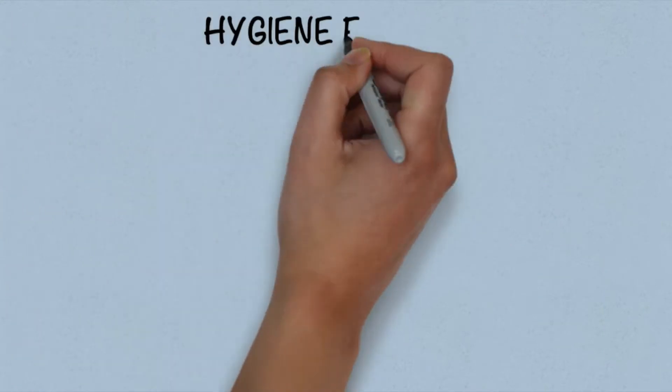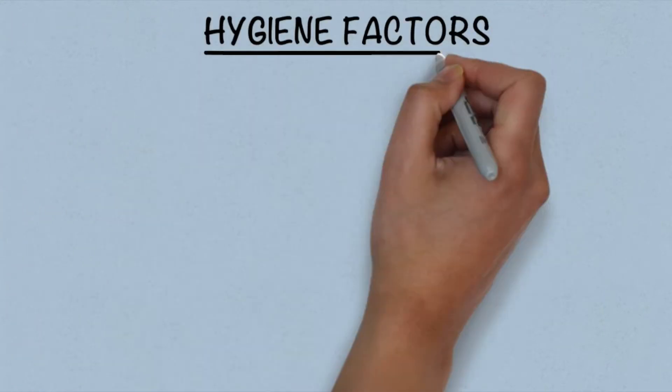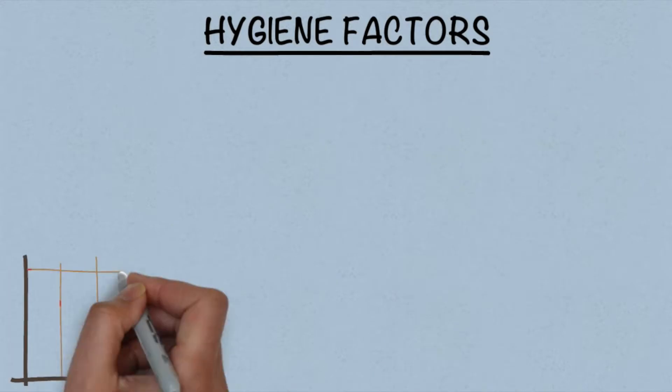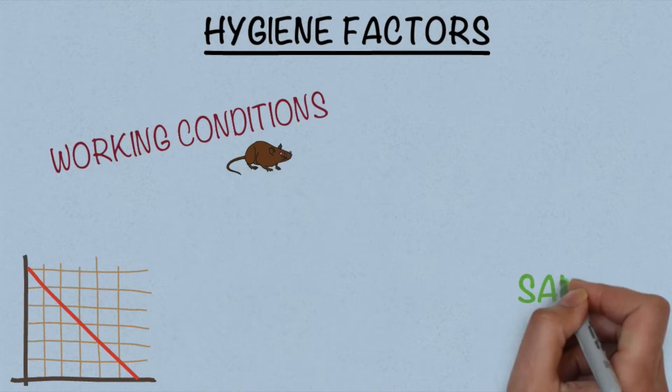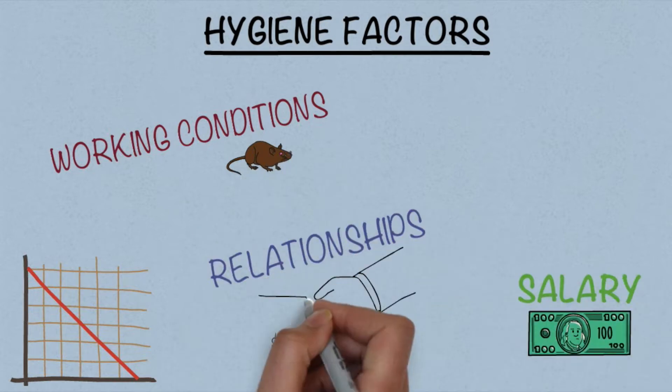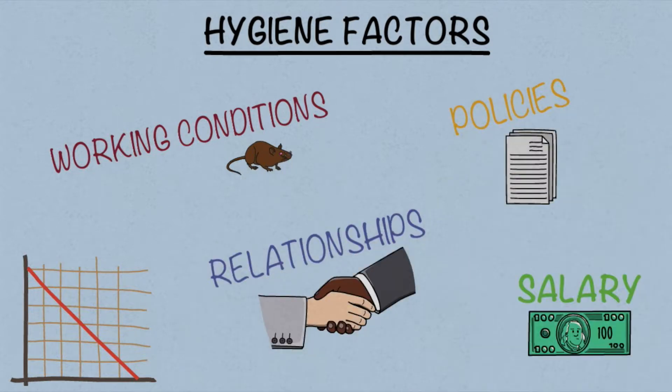The second factor, known as hygiene factors, are anything that can decrease or have a negative effect on employees or job satisfaction. Examples of these are working conditions, salary, employee-manager relationships, policies, and job security.